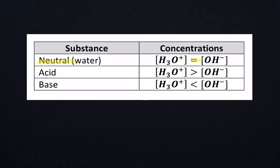Neutral water exists when the concentration of hydronium equals the concentration of hydroxide. These brackets represent concentration. An acid exists when there's more H3O+ ions than OH- ions. A base exists when there's fewer H3O+ ions and more OH- ions in solution.